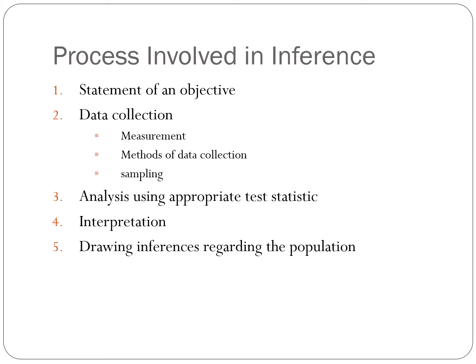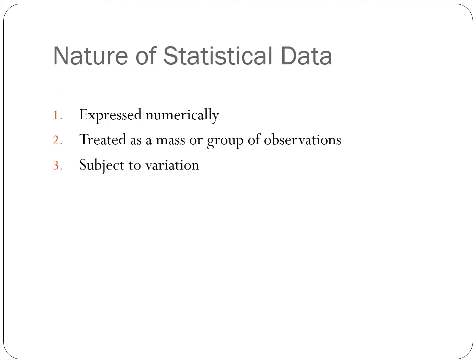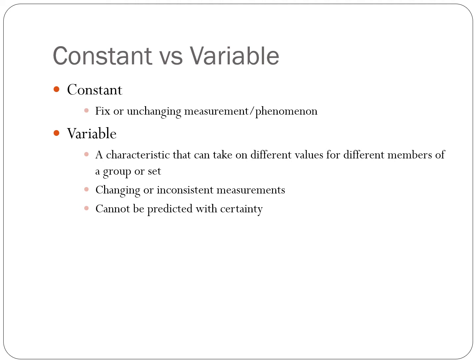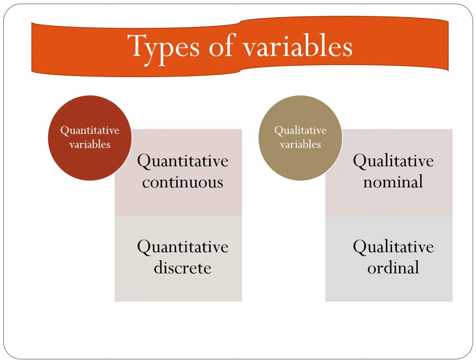Processes involved in inference would be the following: statement of an objective, then we collect data, analysis using appropriate test statistics, interpretation, and you could draw your inferences regarding the population. The nature of statistical data is usually expressed numerically, treated as a mass or group of observations, which is subject to variation. A constant is a fixed or unchanging measurement or phenomenon, while a variable is a characteristic that can take on different values for different members of a group — it involves changing or inconsistent measurements and cannot be predicted with certainty.